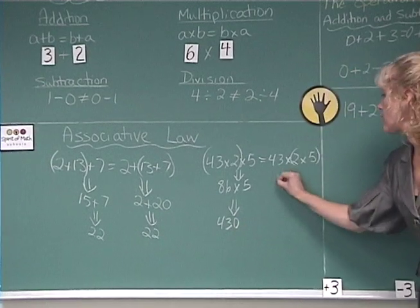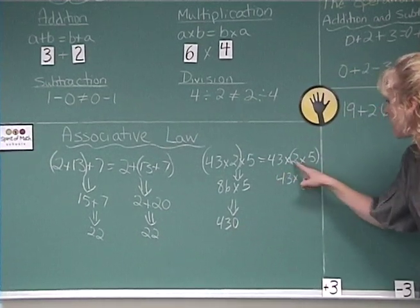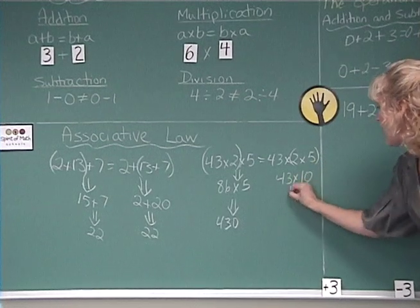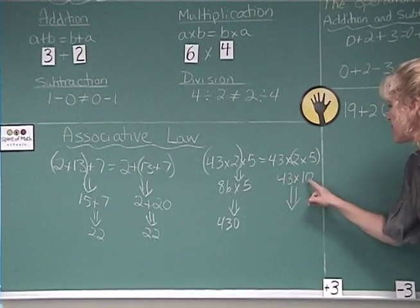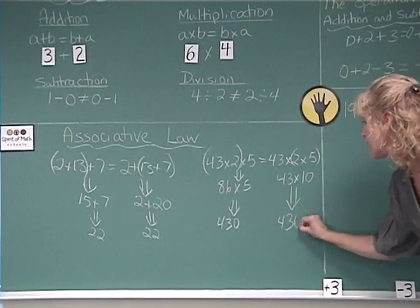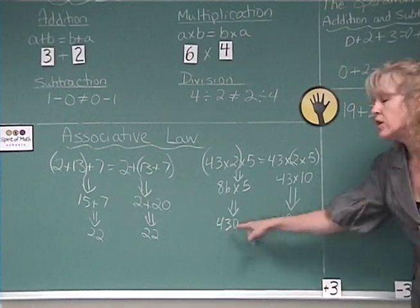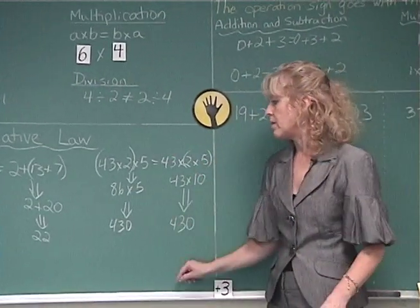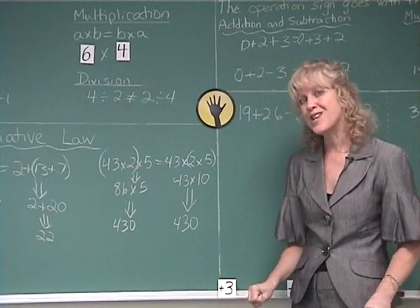In this case, you've got 43 times, and you have to do the 2 times 5 first, which is 10. That will give you, 43 times 10 is much easier to calculate than 86 times 5. You get the same answer. So the associative law makes calculations a lot easier.